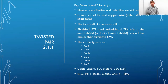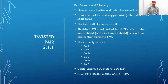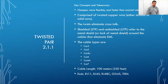Twisted pair is comprised of twisted copper wire, either stranded or solid core. It's advised to use solid core — if you're buying a big spool of unterminated cable, solid core is better. You can pull it through walls and ceilings. It's more reliable and easier to terminate than stranded, which is really only suitable for patch cables.